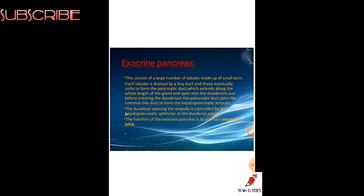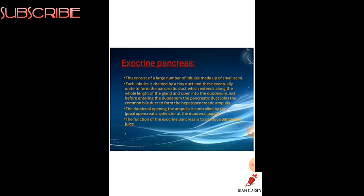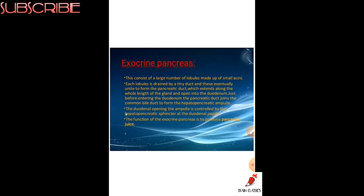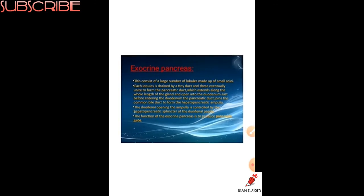Just before entering the duodenum, the pancreatic duct joins the common bile duct to form the hepatopancreatic duct. The opening into the duodenum at the ampulla is controlled by the hepatopancreatic sphincter at the duodenal papilla. The function of the exocrine pancreas is to produce pancreatic juice, which aids in the digestion of food.